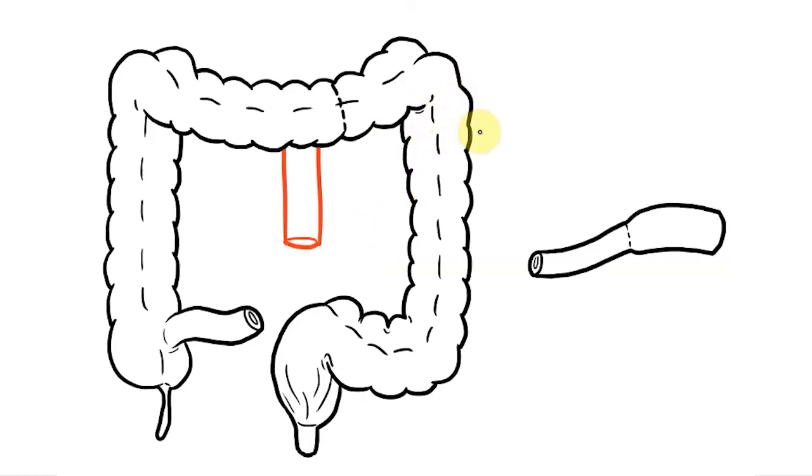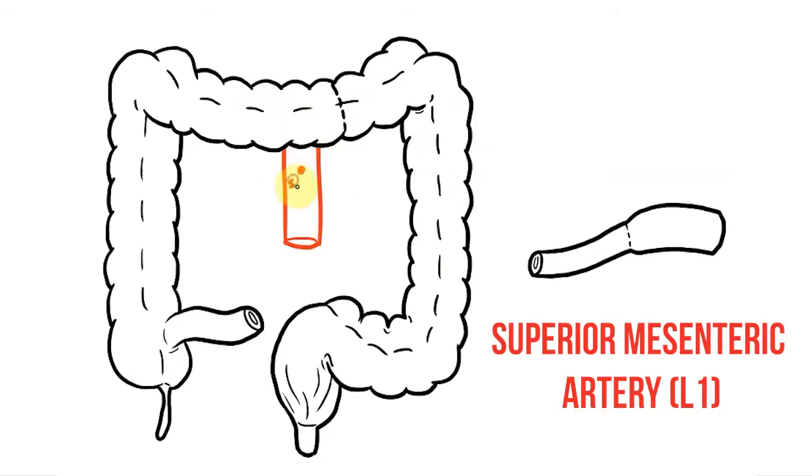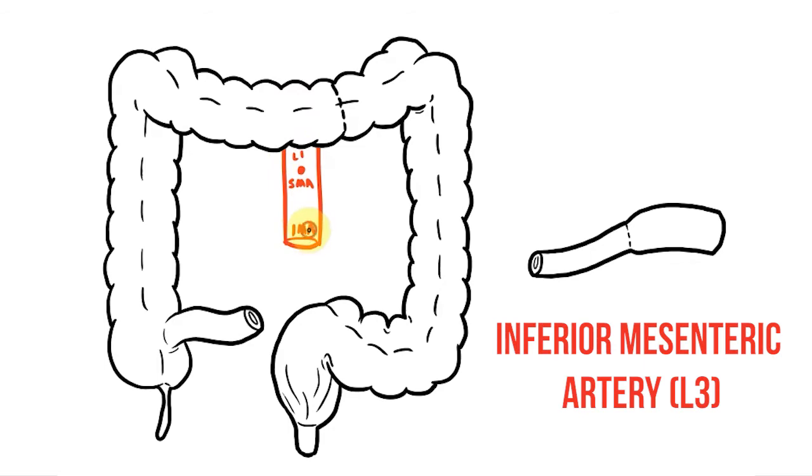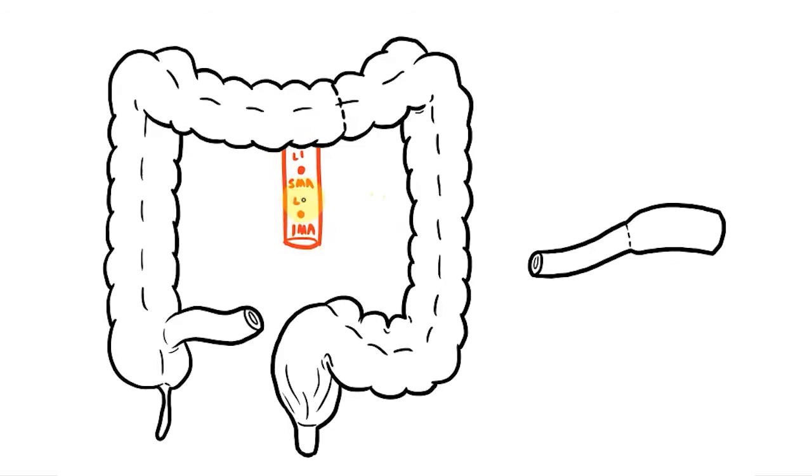Next I need to add the unpaired arteries that supply the midgut and hindgut. The midgut supply starts at the superior mesenteric artery and this leaves the aorta at L1. If we have a superior mesenteric artery we'll also have an inferior mesenteric artery and this leaves the aorta at L3 to supply the hindgut.